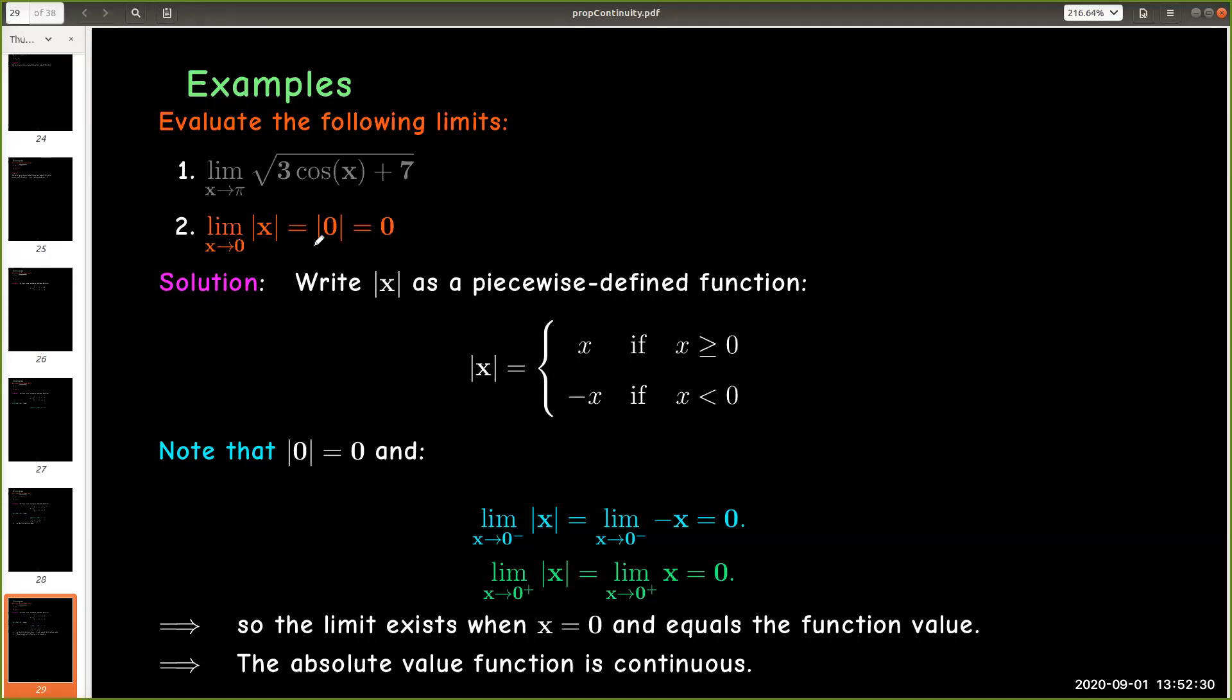And so now we've answered the question. We can just use direct substitution. The limit as x approaches 0 of absolute value of x is 0.